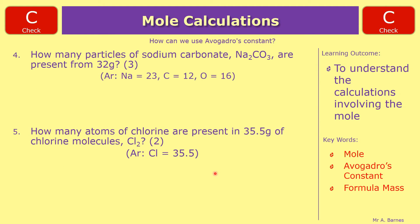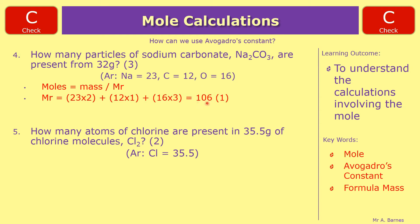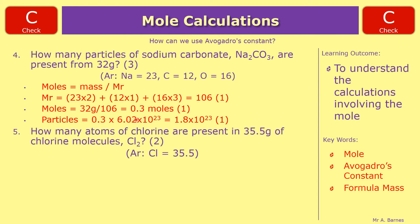Question 4: how many particles of sodium carbonate Na₂CO₃ are present from 32 grams? Moles = mass divided by Mr. Work out the Mr: 2 × 23 for sodium, 1 × 12 for carbon, 3 × 16 for oxygen — giving an Mr of 106, worth one mark. Then moles = 32 divided by 106 = 0.3 moles, for a second mark. Finally, particles = 0.3 × 6.02 × 10²³ = 1.8 × 10²³ for your third mark. Always show your working.